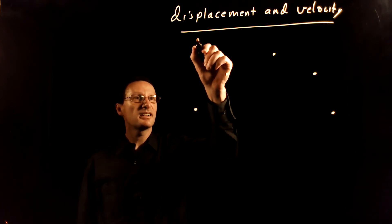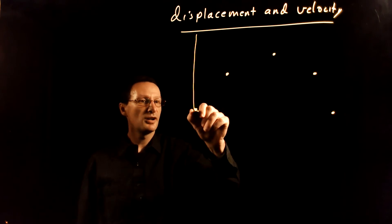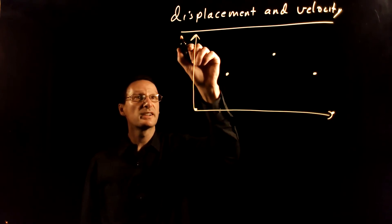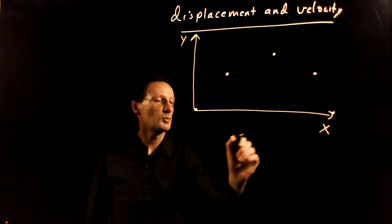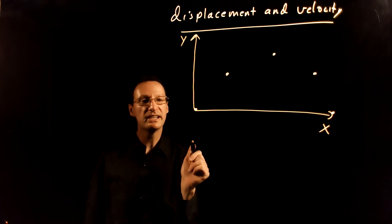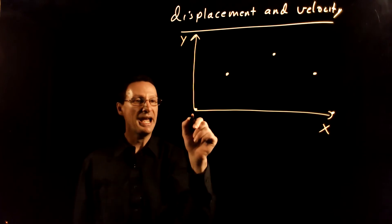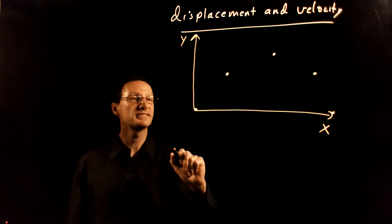To help us analyze this in terms of vectors, we're going to draw an origin here, an xy-coordinate system. So I'm going to draw x and y like that. I'm putting the origin of the coordinate system at the first point. That's where we release it.